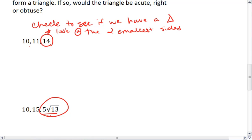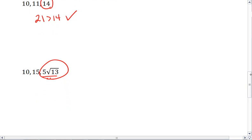Checking the first one, 10 plus 11 is 21, 21 is greater than 14, so we're good. This will form a triangle.